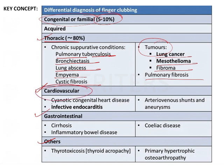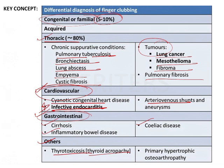Cardiovascular causes include cyanotic congenital heart disease, infective endocarditis, and arteriovenous fistulas. Gastrointestinal causes include celiac disease, inflammatory bowel disease, and cirrhosis. Other causes include thyroid acropathy — that is thyroid toxicosis — and primary hypertrophic osteoarthropathy.